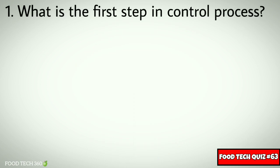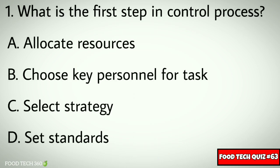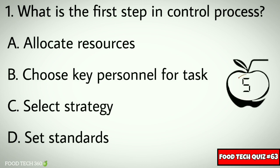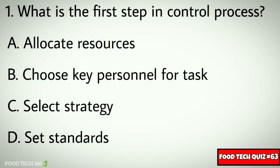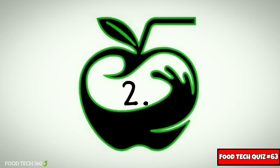Question No. 1. What is the first step in the control process? Options: A. Allocate resources, B. Choose key personnel for tasks, C. Select strategy, D. Set standards. Correct answer: D. Set standards.